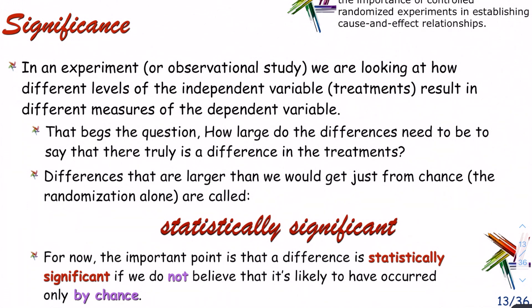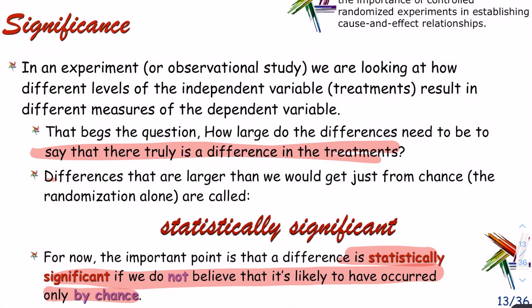In an experiment or observational study, we look at how different levels of the independent variable result in different measures on the dependent variable. That begs the question: how large do the differences need to be to say there truly is a difference in treatments? Differences larger than we'd get from chance — think p-value of 0.05 — are called statistically significant. If we could get these results just due to random chance, it might have just happened out of the blue.